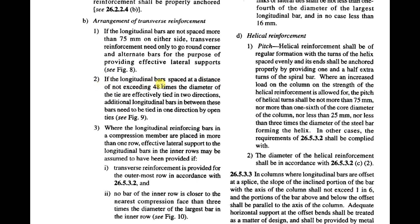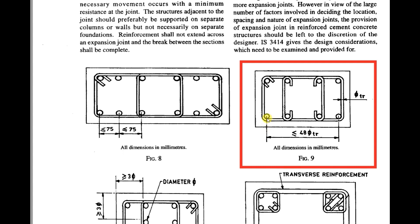If the longitudinal bars are spaced at a distance not exceeding 48 times the diameter of the tie and are effectively tied in two directions, additional longitudinal bars in between need to be tied in one direction by open ties — see Figure 9. In Figure 9, if spacing between two bars does not exceed 48 times the lateral tie diameter, we provide transverse reinforcement connecting all outer bars, and for intermediate longitudinal bars we provide an open (single link) tie — not a closed tie.